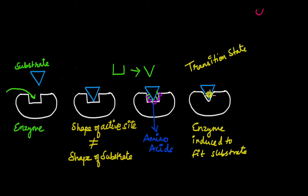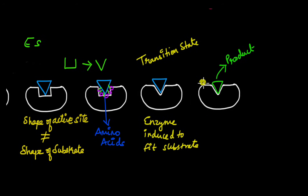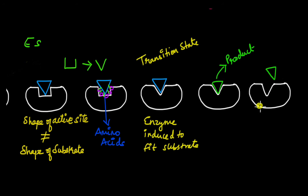As the enzyme undergoes a conformational change, it leads to the formation of the transition state. The transition state is an intermediate state formed as the enzyme-substrate complex is formed, during which bonds in the substrate are being broken and newer bonds are being formed, leading to the formation of the product. The product has much less affinity for the active site compared to the substrate, so once the product is formed, it is released quickly from the enzyme.